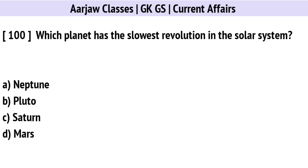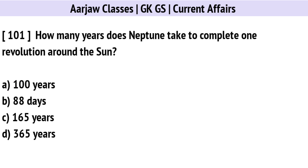Which planet has the slowest revolution in the solar system? The right option is A: Neptune.